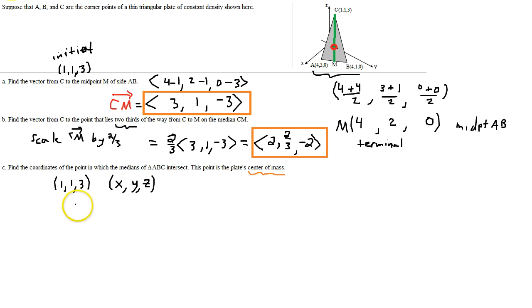And we know the vector that goes from C to that mystery point is 2, 2 thirds and negative 2. And so, we want to find x, y, and z. Remember how we did it. We take the initial and we take the terminal and we subtract the initial. So, x minus 1 and y minus 1 and z minus 3 should be equal to that vector. 2, 2 thirds and negative 2.